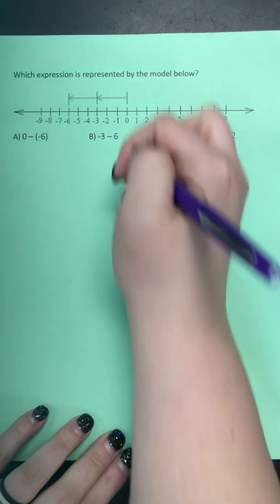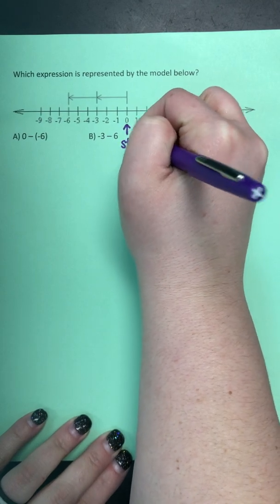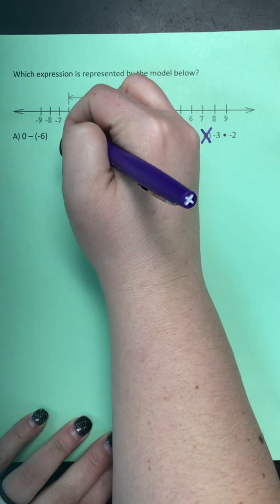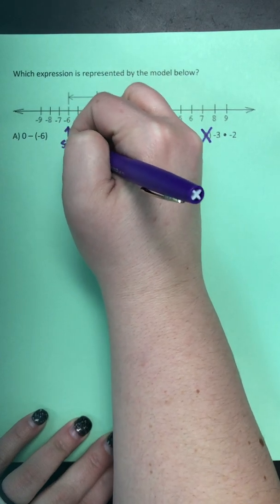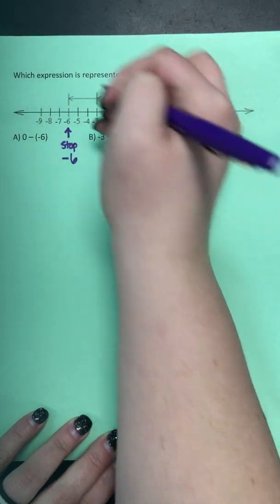So remember when you are looking at your number line, you always start at the zero, and you follow the arrows until they stop, and in this case, they stop at negative six.